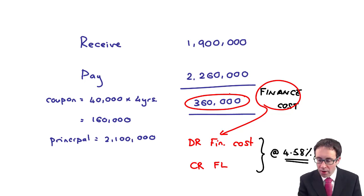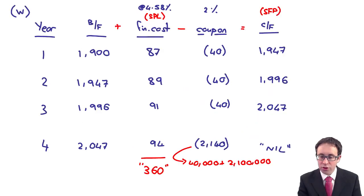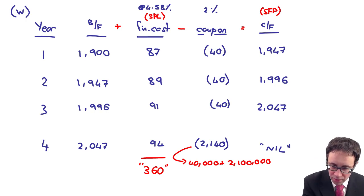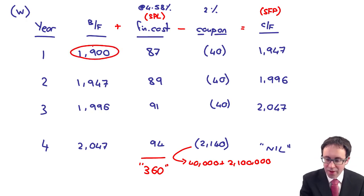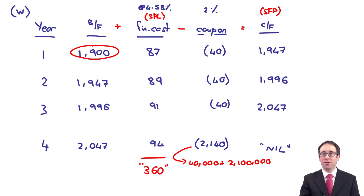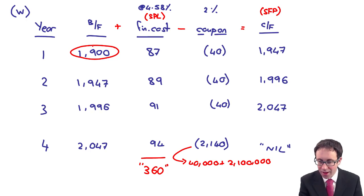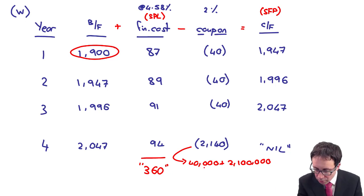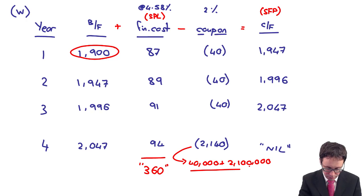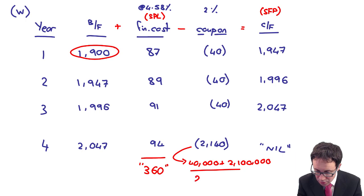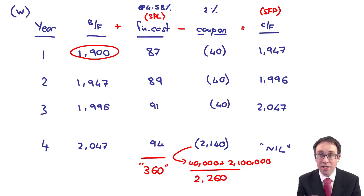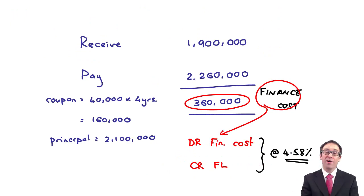What we're doing is accounting for the substance of this transaction. We received 1.9 million initially, paid coupon interest and the premium over the life of the debt, and charged the finance cost to bring everything back down to zero. If you total up all the payments, that gives 2,260 — which is what we have paid overall.